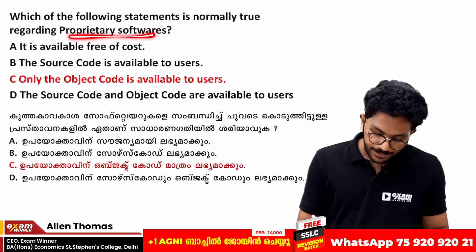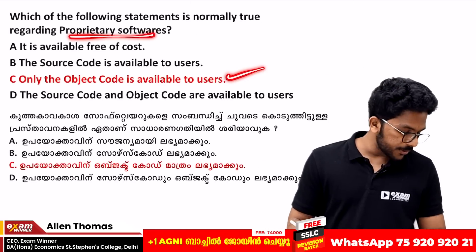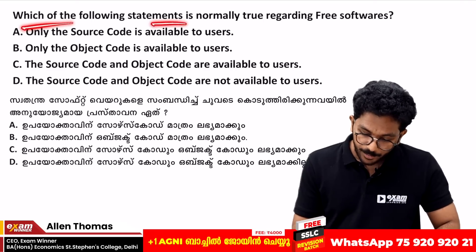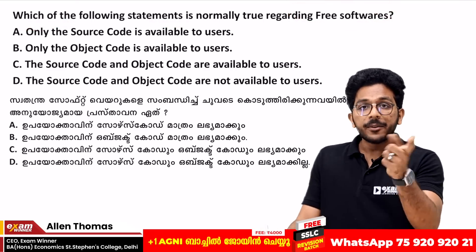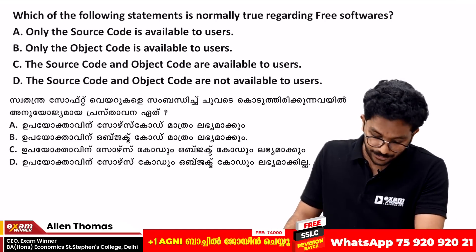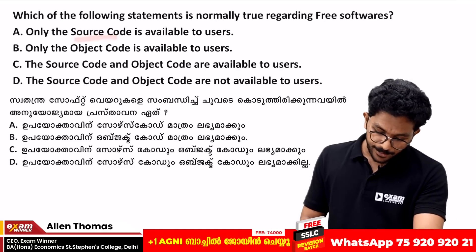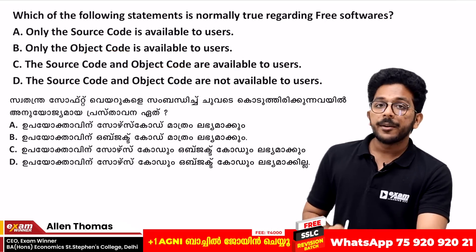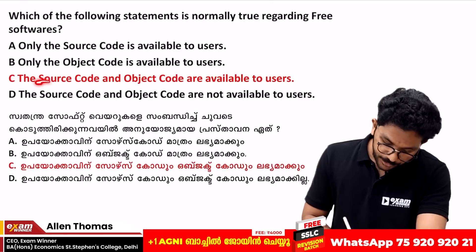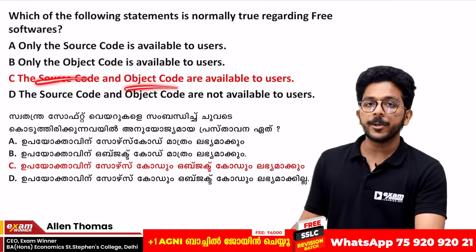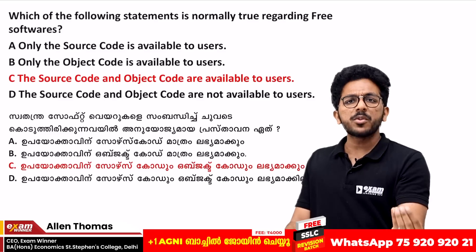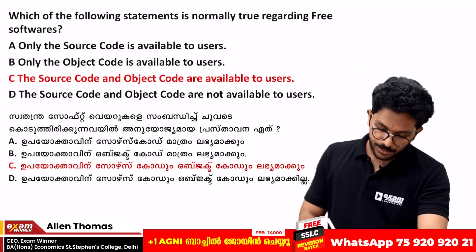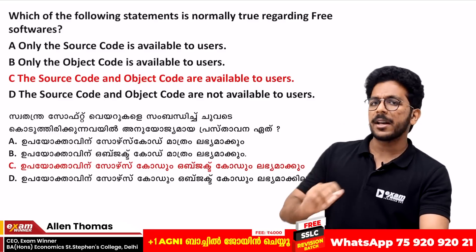Proprietary software provides only the object code. Free software has the source code available. If you have source code, it is the original starting code; object code is the compiled version. The answer for proprietary software is that it provides only object code.